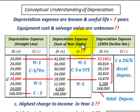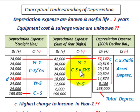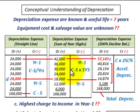For the sum of years digits method, our depreciation base is also cost minus salvage value. We then multiply it by a fractional amount — the remaining years divided by the sum of years digits. That fraction is applied to the cost minus salvage value basis each year.